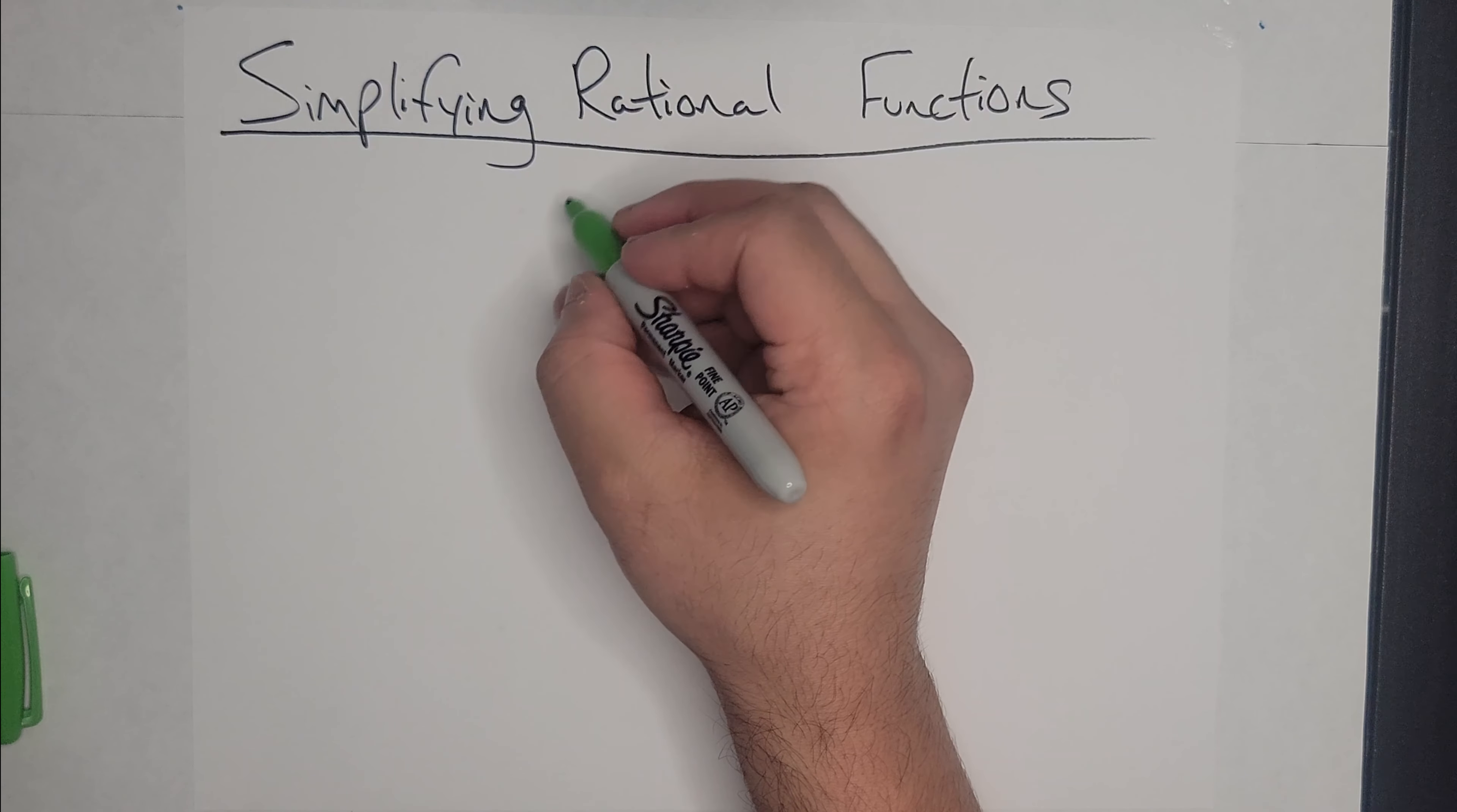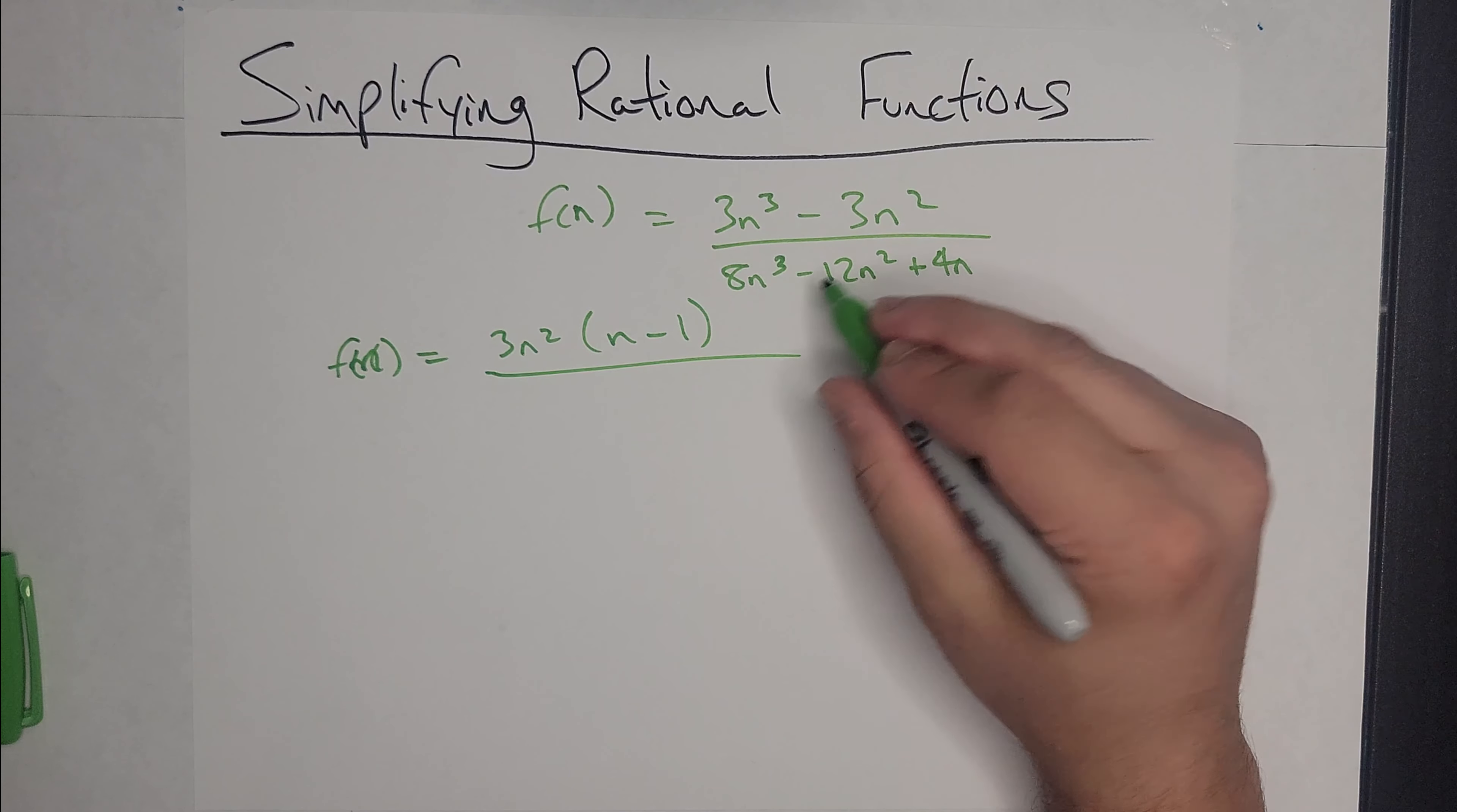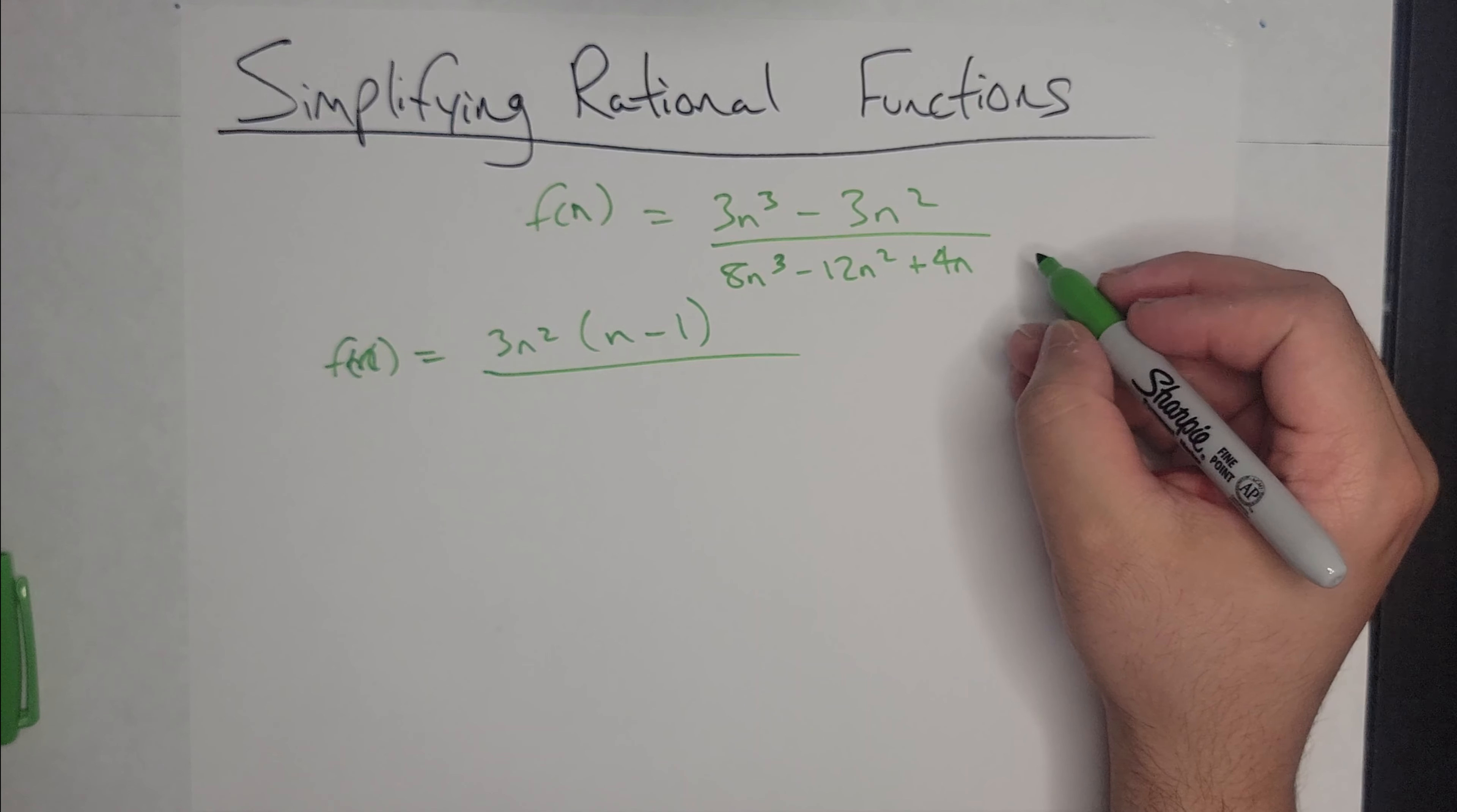Let's see what we can do with this. Let's try simplifying either the numerator or denominator first, or we can actually do it in parallel. So let's look at the numerator. What can I factor out from the top? 3n squared. And from the denominator, I can see that I can factor out a 4n.